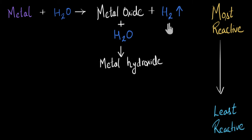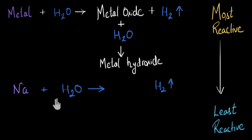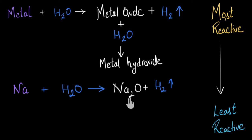Let's look at some examples. First, let's react sodium with water. Sodium will displace hydrogen, so hydrogen gas will definitely be given out. Then sodium will react with oxygen to form sodium oxide, Na₂O. Now sodium oxide is very soluble in water, so it will react with water to form sodium hydroxide. Along with this, the reaction gives out a lot of heat energy.